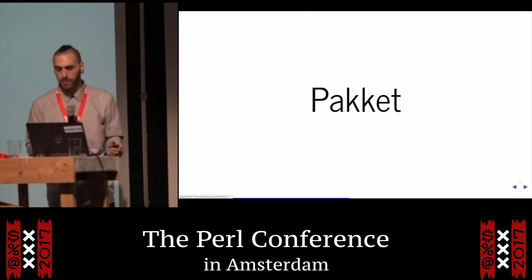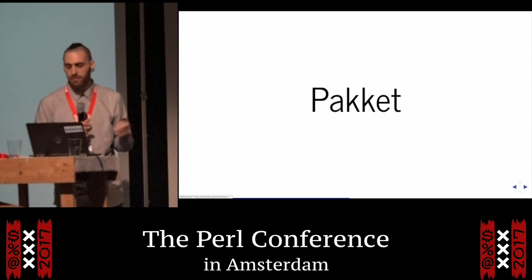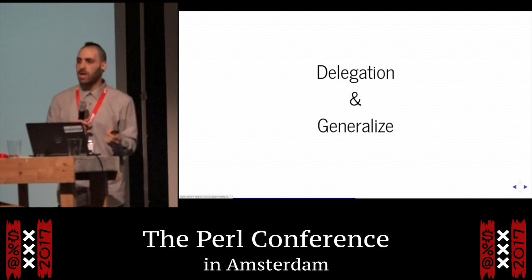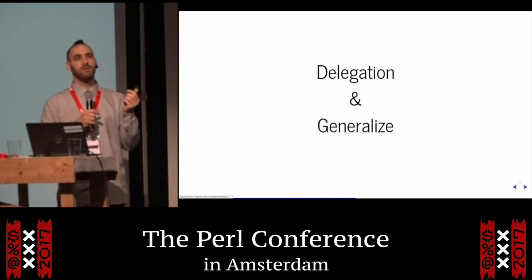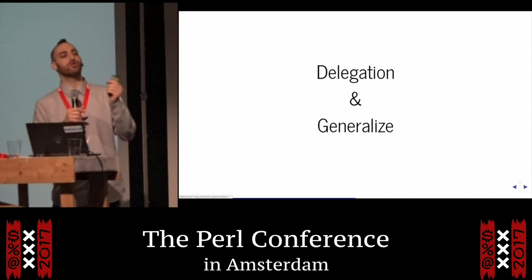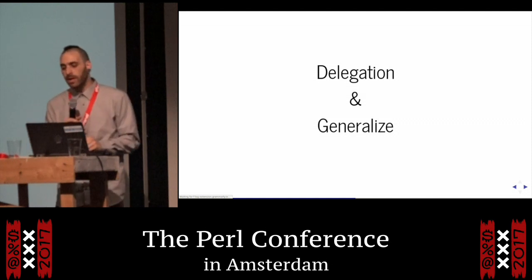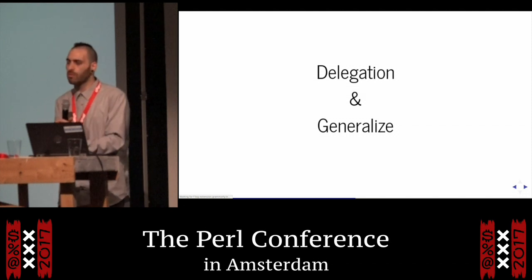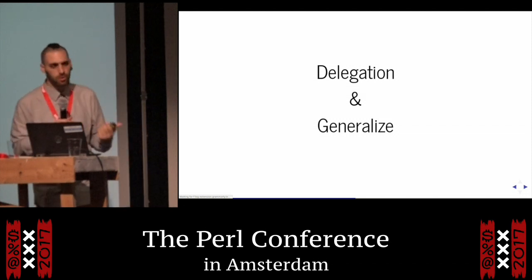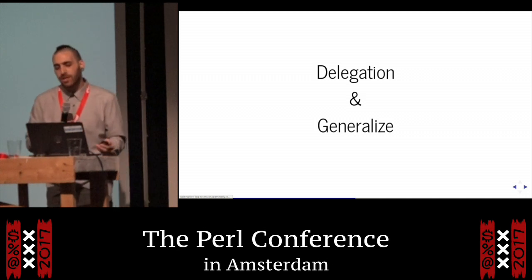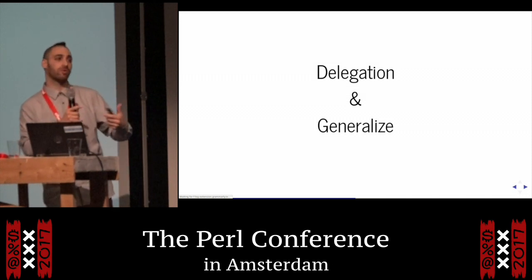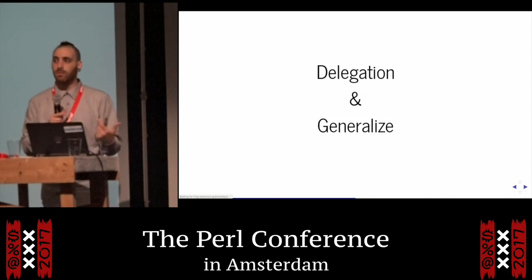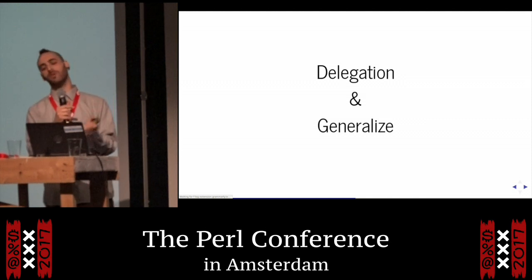We do this using two specific concepts. The first one is delegation. Paquette specifically tries to be — I wouldn't say stupid, I would say ignorant. It tries to not know. Every time it doesn't know something, it's not going to try to know — it's going to ask someone who does know. The second concept is generalization: every time you can have one solution that fits all in a generalized way, it will do that. So it is both of them. They seem contradictory, and they are sometimes, but sometimes they work really well together.